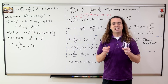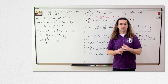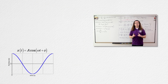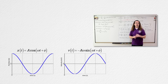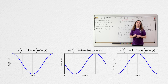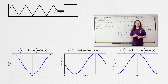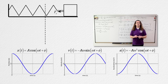Now let's take a look at the graphs of these equations. Position is a cosine graph. Velocity is a negative sine graph. Let's return back to the horizontal mass-spring system and relate it to these graphs.